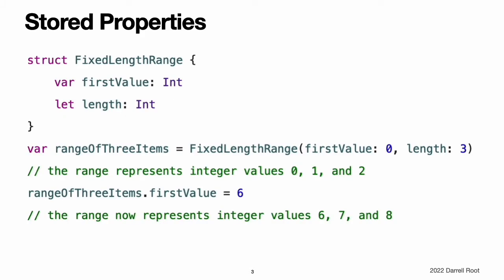In its simplest form, a stored property is a constant or variable that is stored as part of an instance of a particular class or structure. Stored properties can be either variable stored properties, introduced by the var keyword, or constant stored properties, introduced by the let keyword. You can provide a default value for a stored property as part of its definition.